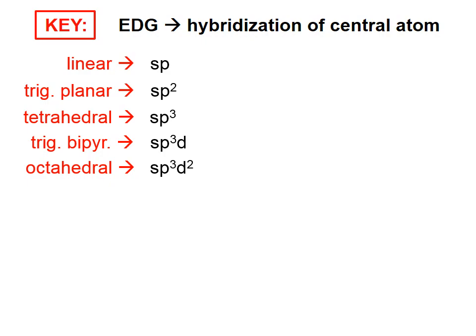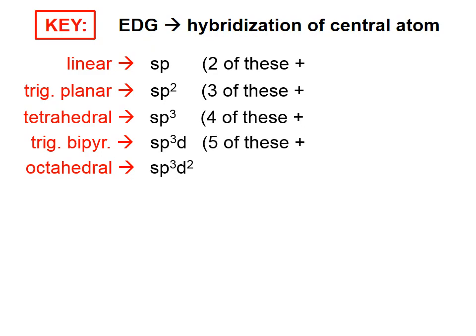Recall that the number to remember for linear is 2. For trigonal planar, it's 3. I hope you're seeing a pattern here. For tetrahedral, it's 4. For trigonal bipyramidal, it's 5. And for octahedral, it's 6. Now, when SP hybrid orbitals are formed, there are two of them formed. You see, you start with an S and a P, and you mix them, and you pop out two SP hybrid orbitals. When you make SP2 hybrid orbitals, you make them 3 at a time. When you make SP3 hybrid orbitals, you make 4 of them at a time. SP3D, 5 of them at a time. SP3D2, 6 of them at a time.